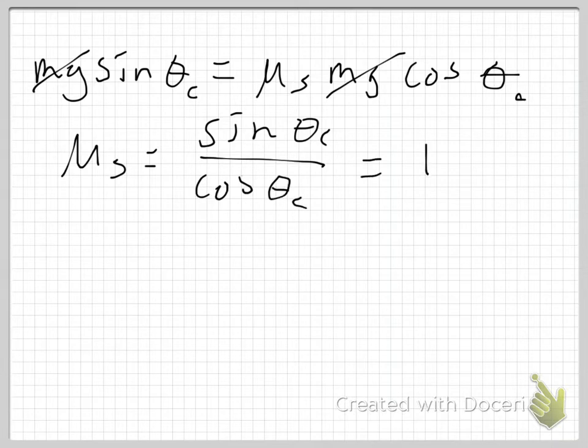And then I can solve this for mu static, which equals sine theta critical over cosine theta critical, which of course just equals, you know, some trigonometry, the tangent of theta critical. So this is actually the answer I was looking for to part C. If I were to ask you this on a test, I would expect a little bit of derivation. But you would get some points for just writing down if you knew that mu static is equal to the tangent of theta critical.